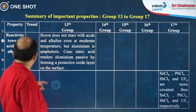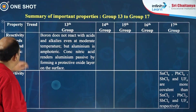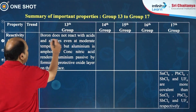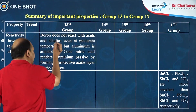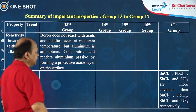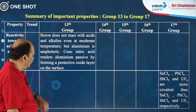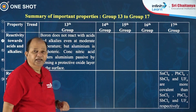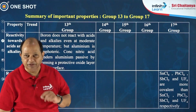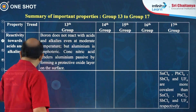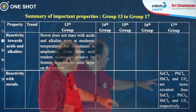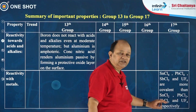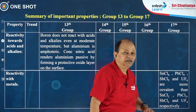The next property is reactivity towards acids and alkalis. For group 13 elements, boron does not react with acids and alkalis even at moderate temperature. Aluminum is amphoteric; concentrated nitric acid renders aluminum passive by forming a protective layer on its surface. Regarding reaction with metals, higher chlorides are covalent, while lower chlorides are less covalent than the higher chlorides.